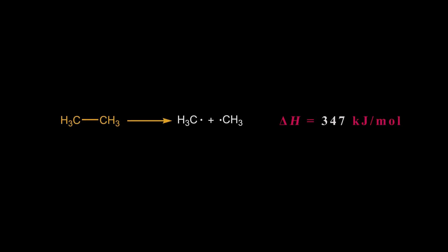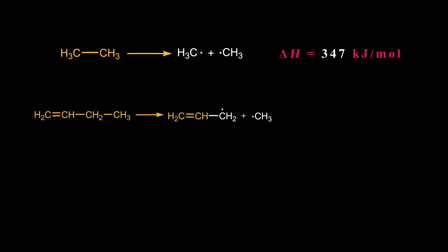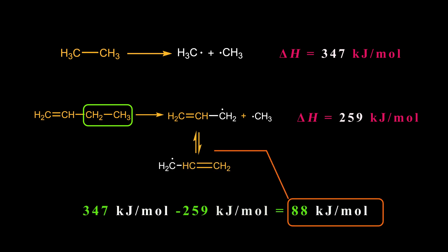Doering and Roth began with the assumption that the bond dissociation energy of the carbon-carbon single bond in ethane is 347 kJ per mole. It was also known that the activation energy for the homolysis of one sigma bond to form a methyl radical and an allyl radical is 259 kJ per mole. The 88 kJ per mole difference was attributed to the stabilization of the allylic radical by the delocalization of the pi electrons.